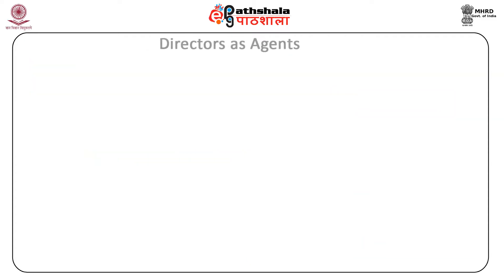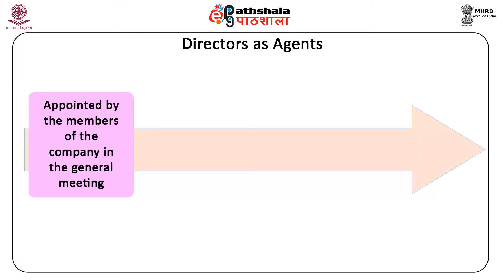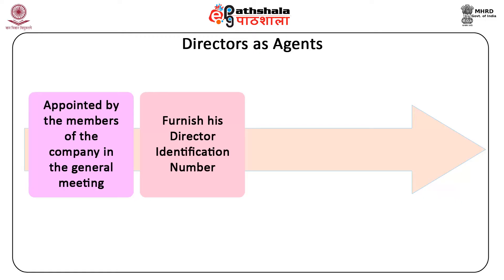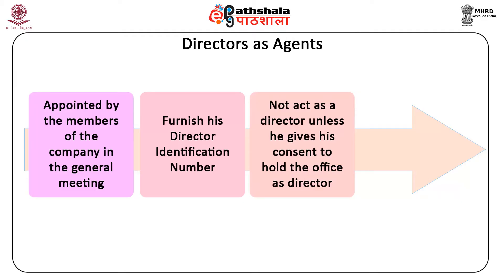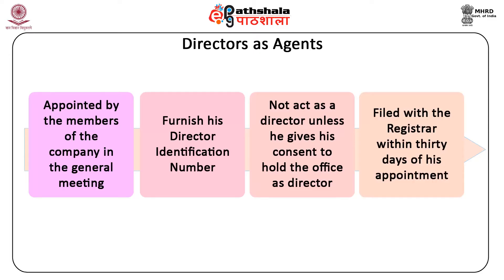Appointment of directors by members: the subsequent directors in the case of a public company are appointed by the members of the company in the general meeting. Every person proposed to be appointed as a director shall furnish his director identification number and a declaration that he is not disqualified to become a director under this Act. Further, a person appointed as a director shall not act as a director unless he gives his consent to hold the office as director, and such consent has been filed with the registrar within 30 days of his appointment.